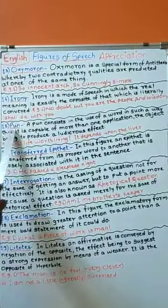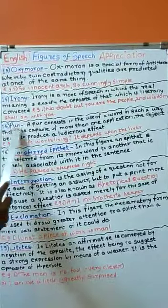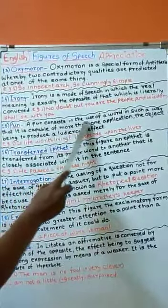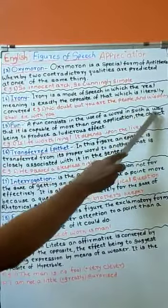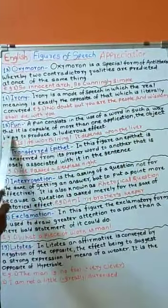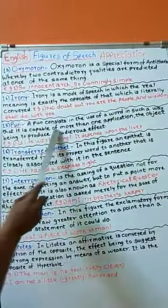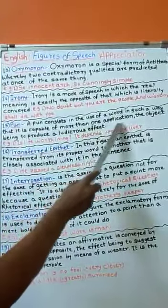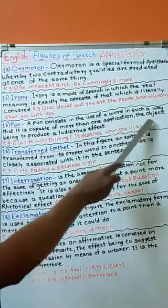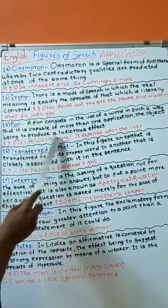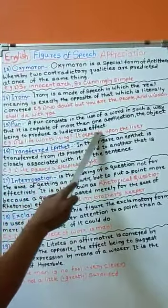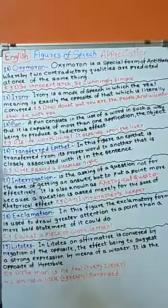Next type, Pun. A pun consists in the use of a word in such a way that it is capable of more than one application, the object being to produce a ludicrous effect.